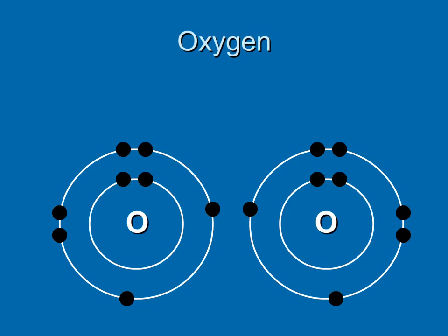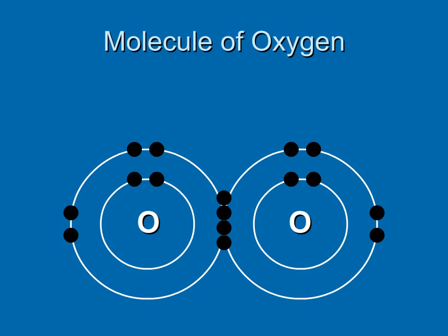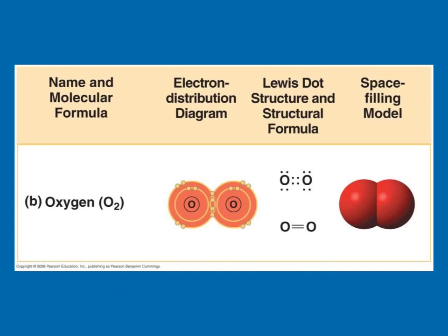Like hydrogen, oxygen atoms cannot exist on their own. How many electrons does each oxygen need to have a full valence shell? Yes, two. And an oxygen atom can share two electrons with another oxygen atom to achieve stability. So, here are the ways we can represent oxygen molecules. If you notice, how many lines are between the two oxygen atoms in the structural formula? Yes, there are two lines. And how many electrons are shared in total when two oxygen atoms are covalently bonded? Yes, four. Remember, each line represents two shared electrons.